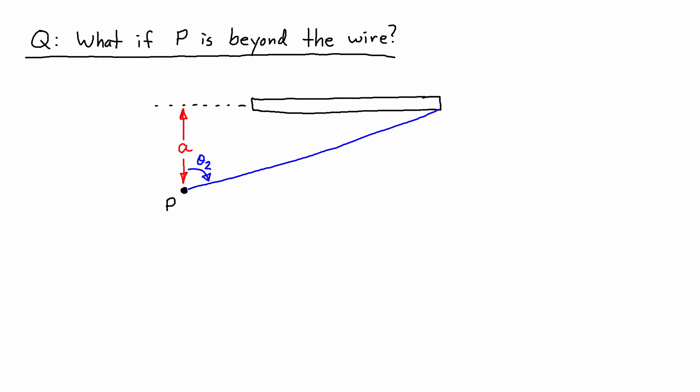The short answer is that theta 1 was originally measured counterclockwise from that perpendicular line. So theta 1 originally was measured on the left-hand side here. When the wire doesn't reach point P, or when point P is beyond the wire, then we can actually treat this a little bit differently.